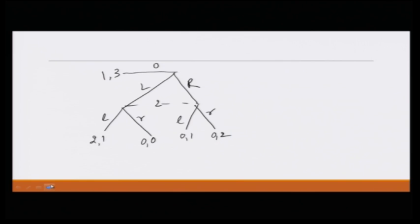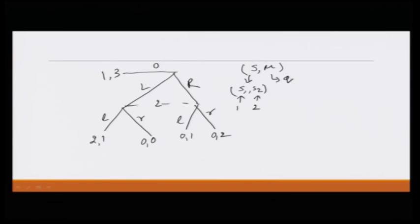Coming back to the example, let us find the perfect Bayesian equilibrium here. A perfect Bayesian equilibrium would be written as S comma mu, where S is the strategy profile (S1, S2) — S1 the strategy of player 1 and S2 the strategy of player 2. Mu describes the belief system; since there is only one information set which is not singleton, the belief needs to be described only at that information set. So mu is basically what we were calling Q in the last class.